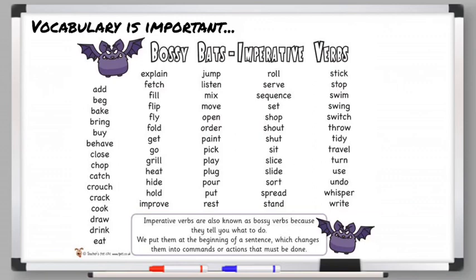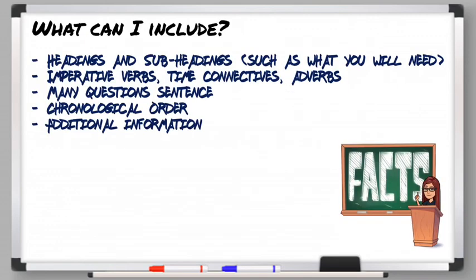So let's talk about what kinds of things we can include. Headings and subheadings are very specific to this text type. You would need a main heading so the reader knows what the instructions are about, and then subheadings running through it — for example, a section about what you will need, a section about what you need to do, and then at the bottom a section called 'important information'.